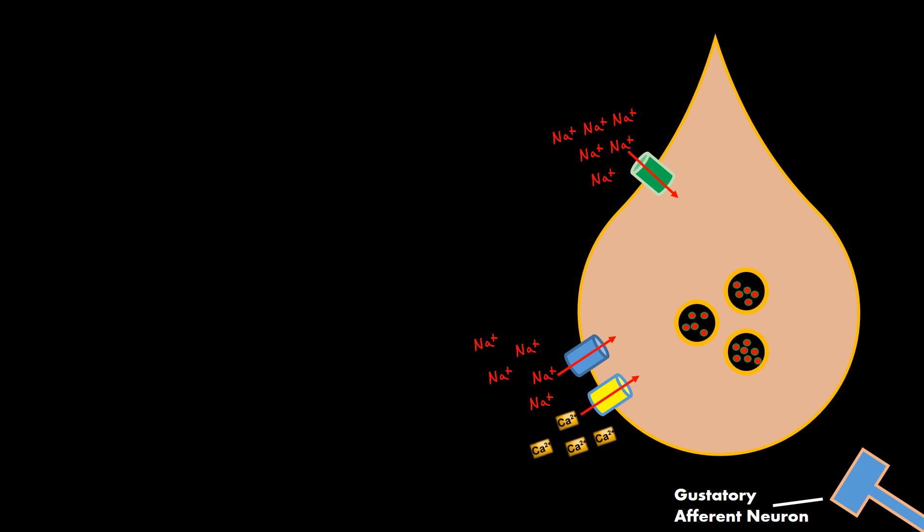These gustatory cells have special channels that just let sodium come through into the cell itself. So you see here this sodium is just going straight into the cell, and when sodium goes into basically any cell in the body it's going to cause the polarity to go more positive or more towards zero.